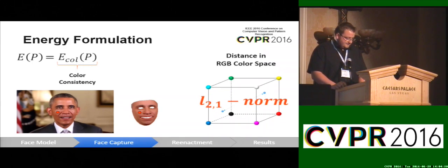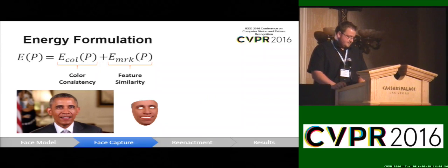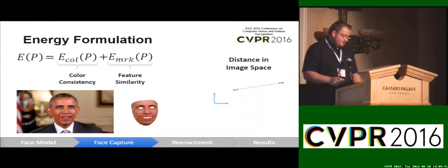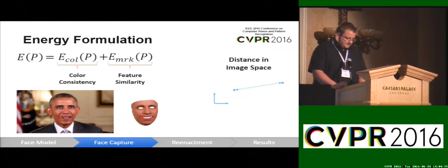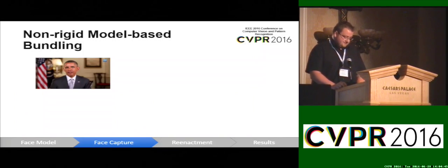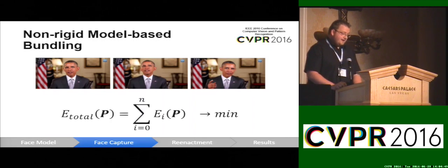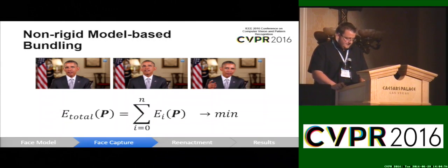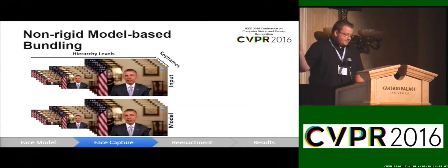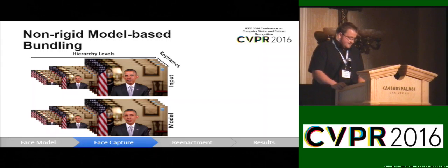In addition to this dense term, we have a sparse feature term: we detect features in the input image and match them to the corresponding points on the template mesh. When estimating the identity parameters alpha and beta, we use not just one image but several images — we sum up the per-frame energy and then use a GPU-based Gauss-Newton solver, which is based on a coarse-to-fine hierarchy. We start from coarse and propagate the solution to higher levels, and in the bottom row you can already see the overlaid template mesh fitted to the input data.